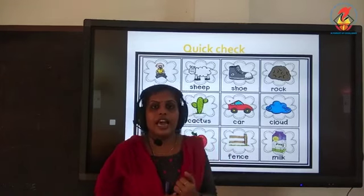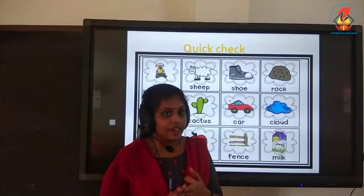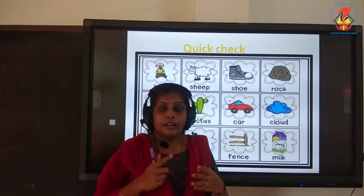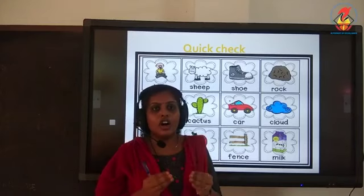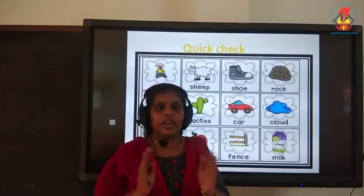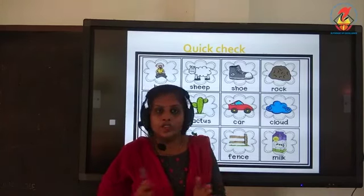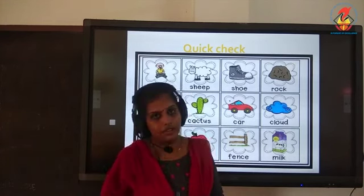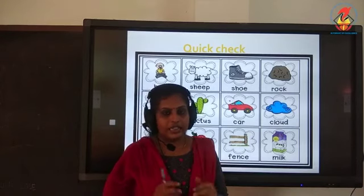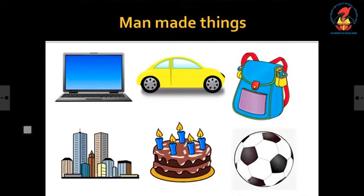To recap: living things have certain features — they can breathe, move, feel, respond to stimuli, reproduce, and they will die. If all these qualities apply to a thing, it can be called a living thing. If none of these qualities apply, then we call that thing a non-living thing. I think you now understand what is a living and a non-living thing.